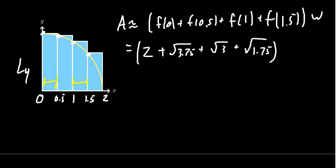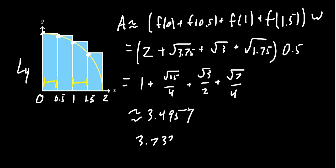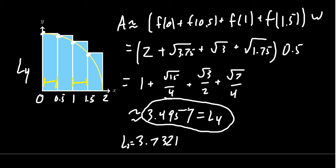It's tedious arithmetic with the square roots, but we can approximate them using Newton's method. The result is approximately 3.4957. Comparing this to L2's 3.7321, using four rectangles improves the estimate — we're closer to 3.14159. In general, the more rectangles you use, the better the estimate.